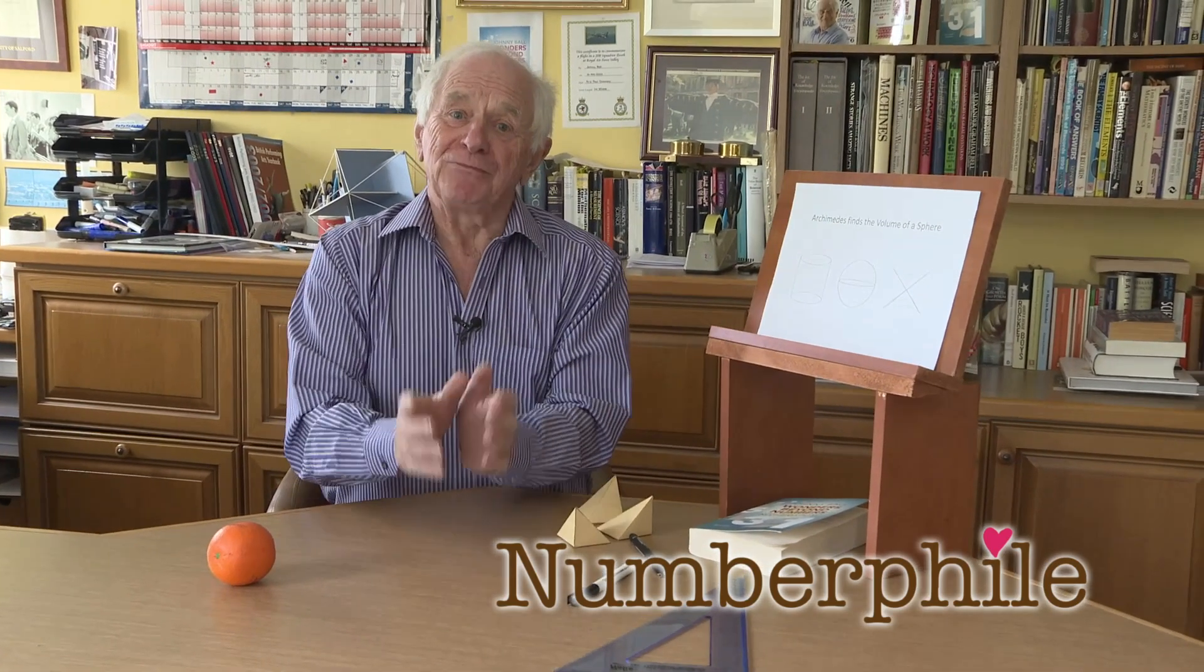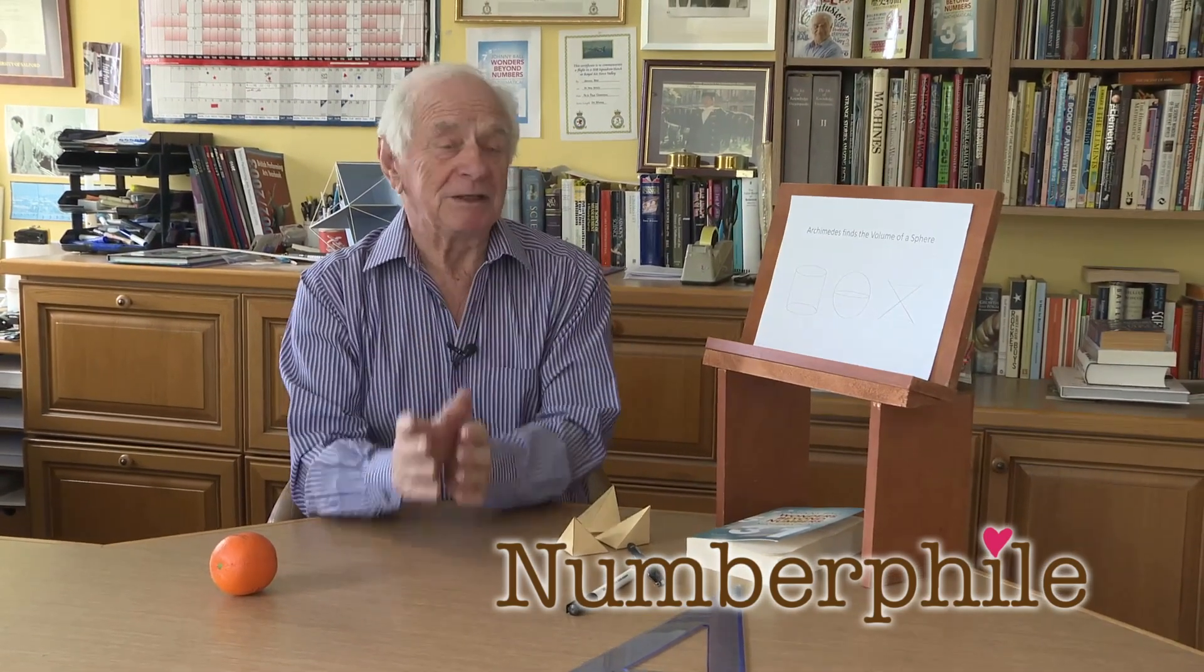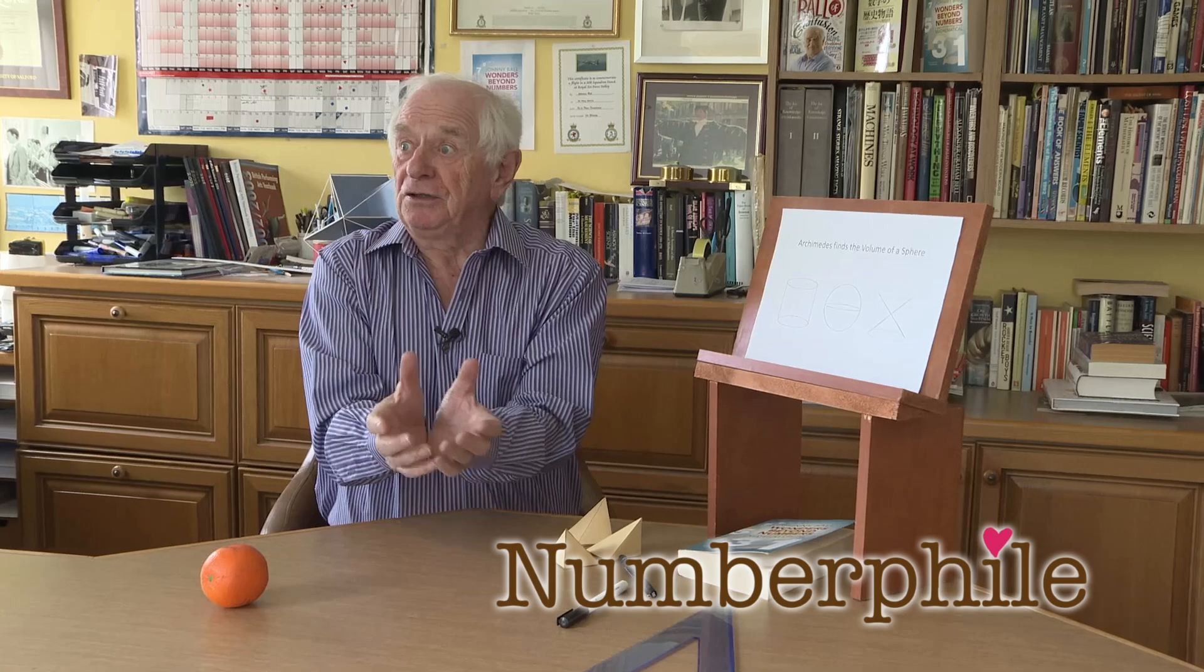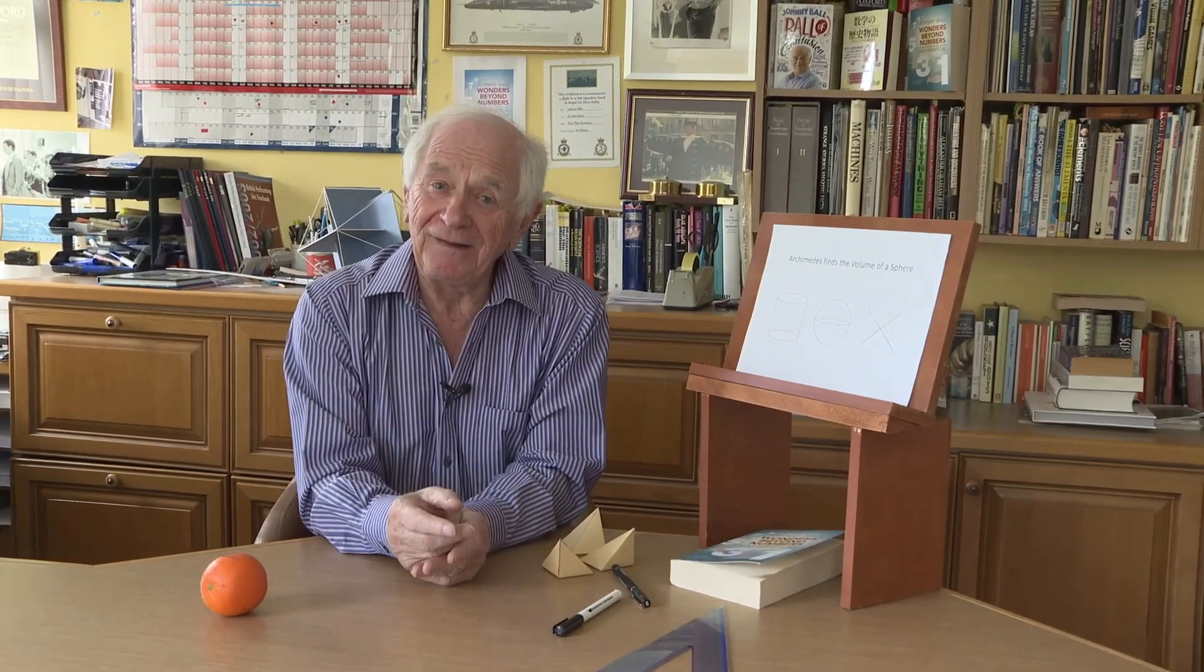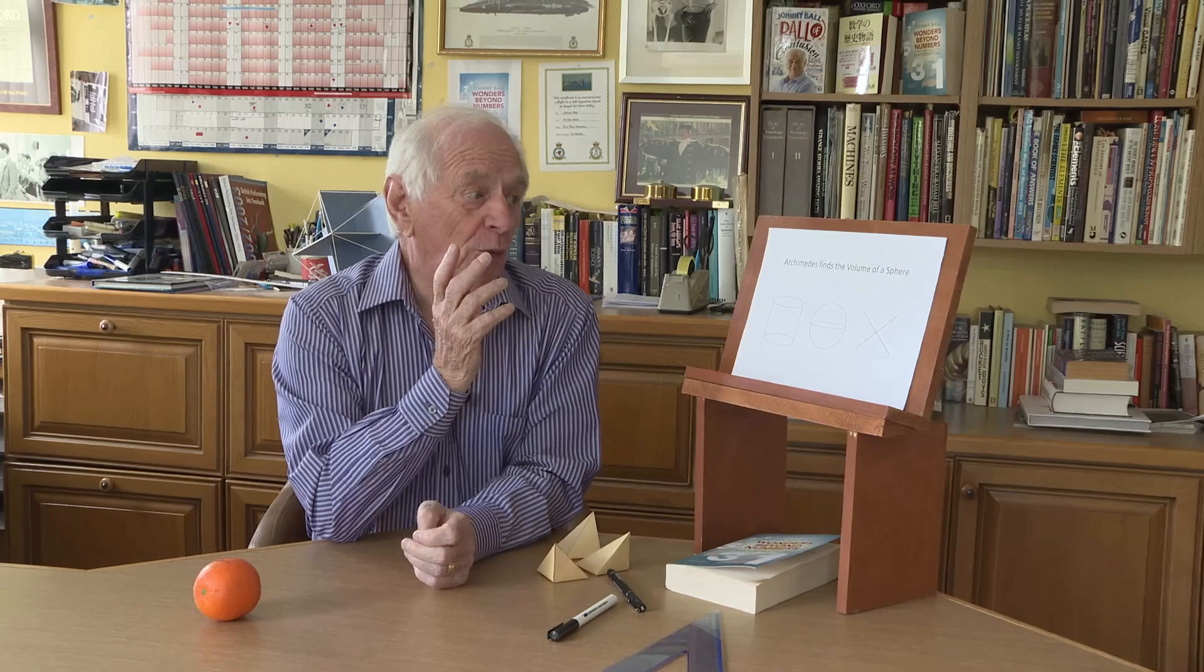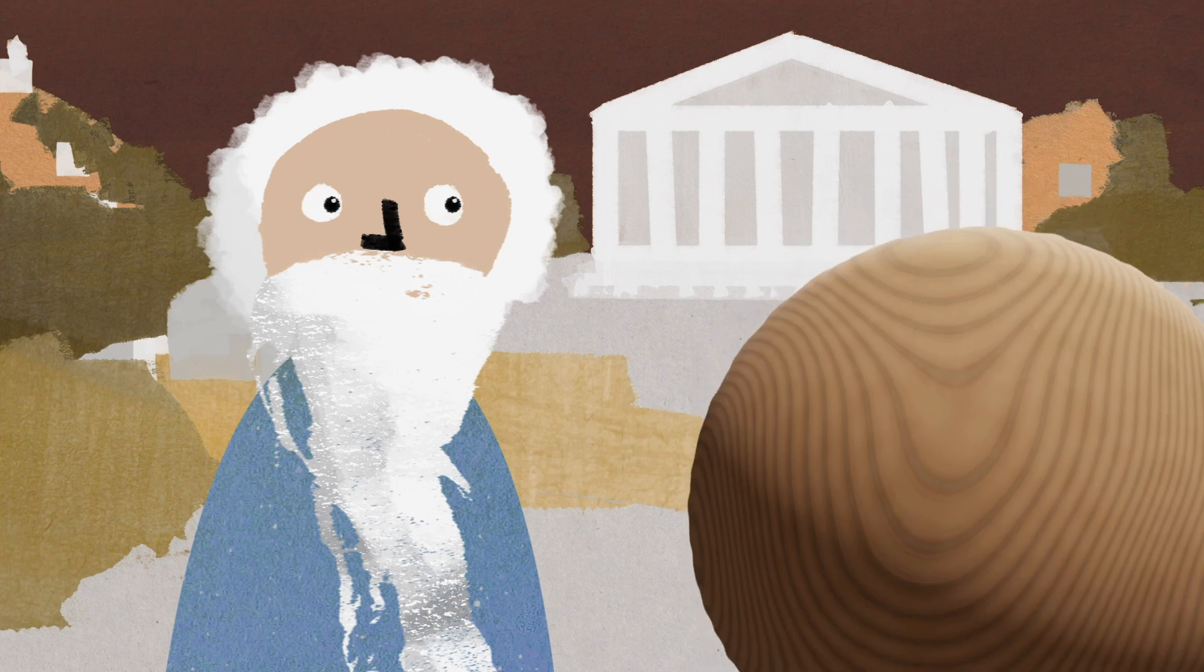I love exploring ancient mathematics because the ancient mathematicians had to make decisions, had to work things out without the tools that we have today. So how did they do it? Well, the greatest of them all was Archimedes and he found the volume of a sphere. How did he do it? Well, we think it may have gone like this.